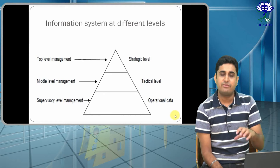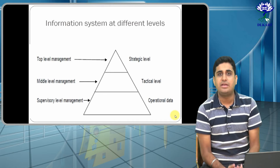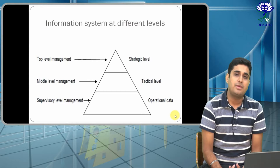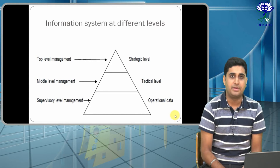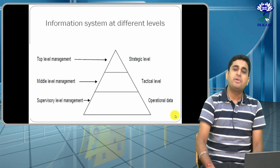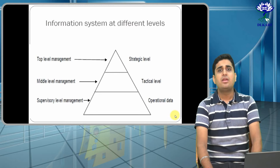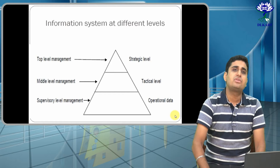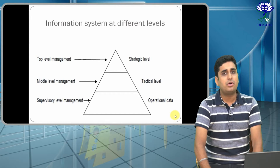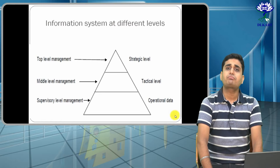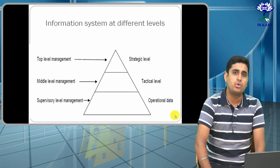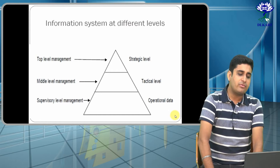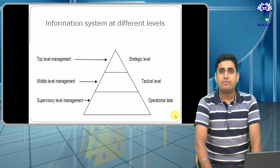At the strategic level, the decisions which are taken are strategic decisions, taken by the people who are at the top of the company. Then you have middle level management systems, where the people working at the very next level after the boss or after the CEO are found — these are the people who take decisions for the betterment of the company.